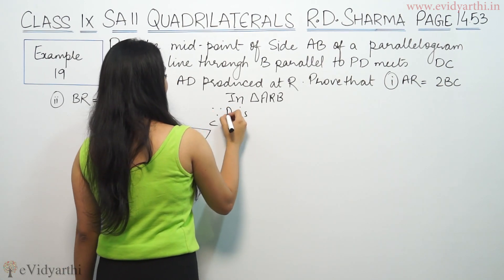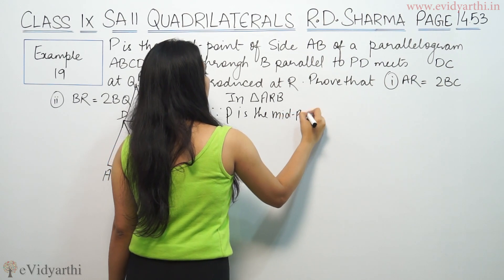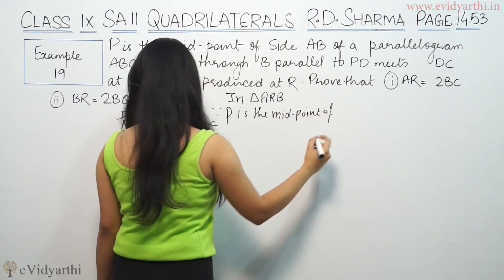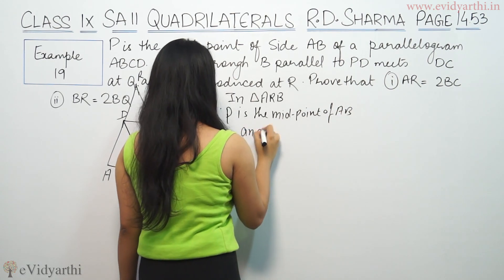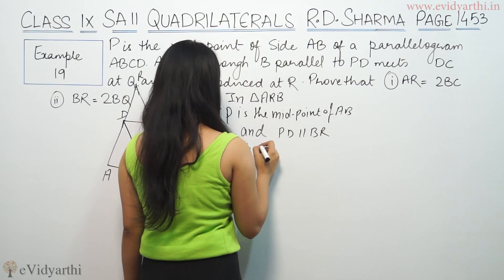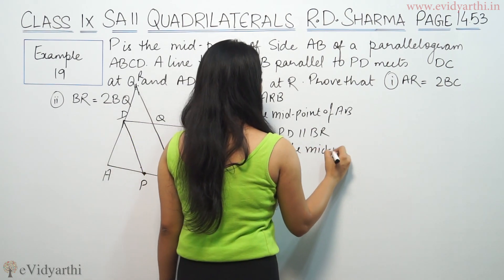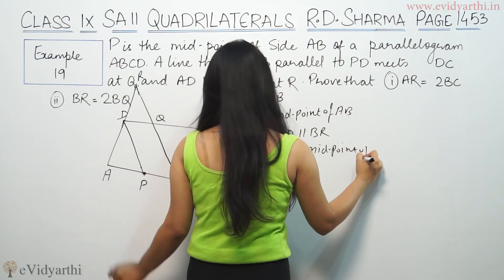Since P is the midpoint of AB and PD is parallel to BR, therefore D is the midpoint of AR.